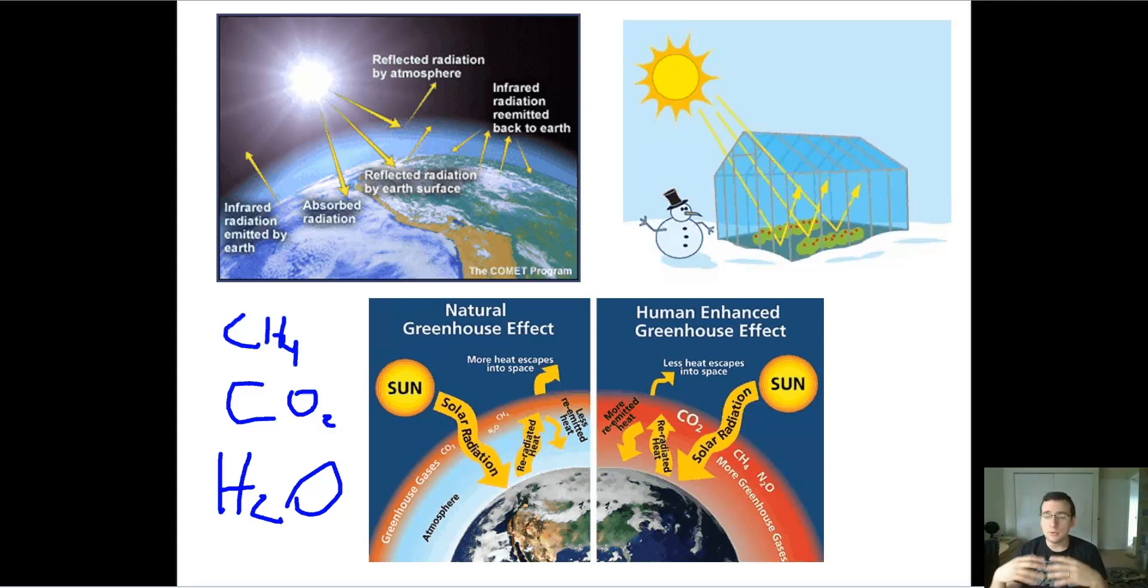Because what ends up happening is that these things will trap the heat of the sun. And then that means that during the night, when there's no sun, it's still kind of nice. If it wasn't for the greenhouse gases, during the night, it would become frigid because there would be no sunlight.